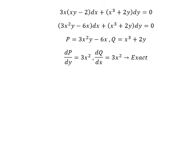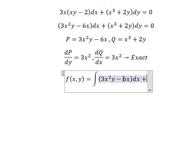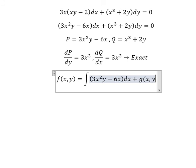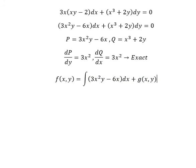Now I need to create the function f(x,y). I will choose this term and integrate. The integration of 3x²y - 6x with respect to x gives x³y - 3x² plus g(x,y).